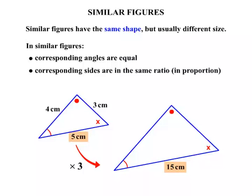So if that's been multiplied by 3, we would find that all the other sides will be multiplied by 3 as well. That's what is meant by the sides being in the same ratio, in proportion.